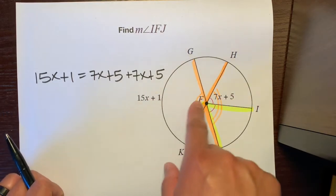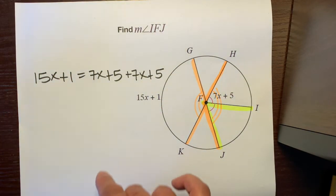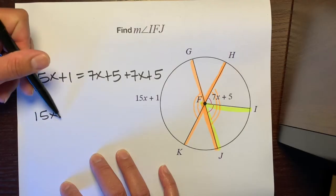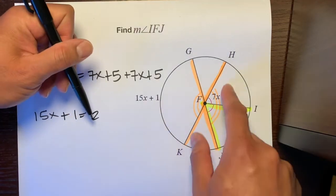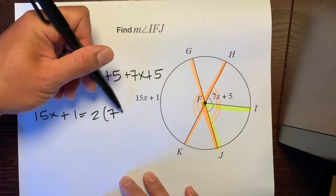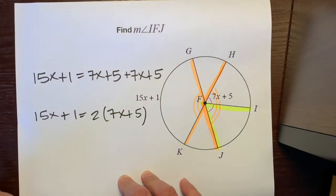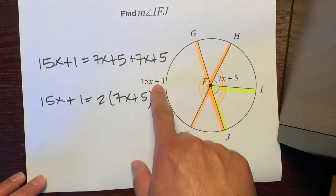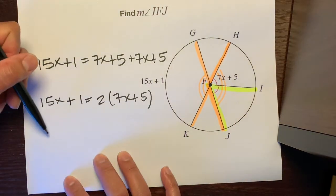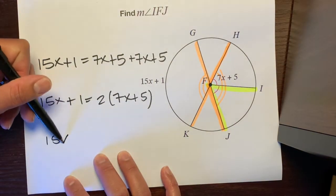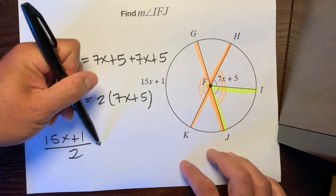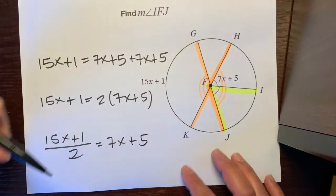Two of these make up this one angle. Other ways that you could set this up, since the two of these put together, you could write it as 15x plus 1 is equal to two of these angles, 7x plus 5. Or a third way to set this up is you could cut this angle in half to set it equal to that. You can write 15x plus 1 divided by 2 is equal to one of these 7x plus 5.